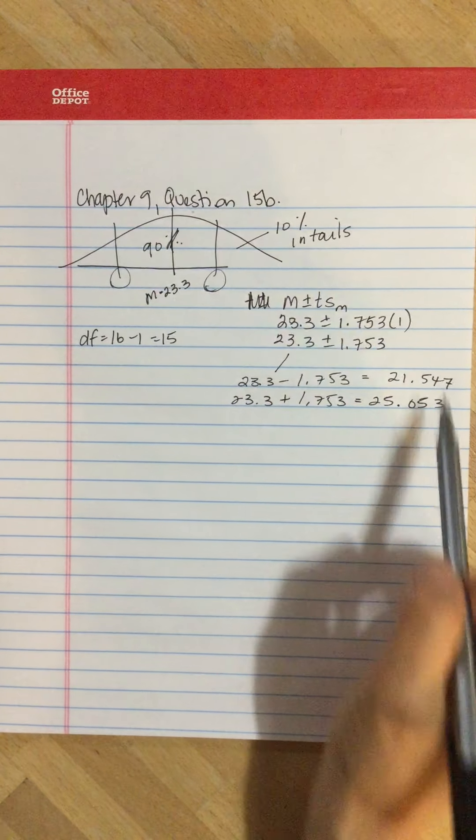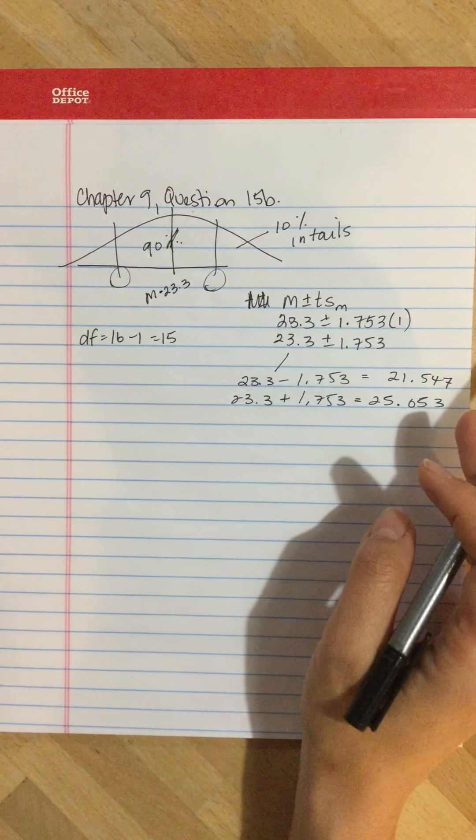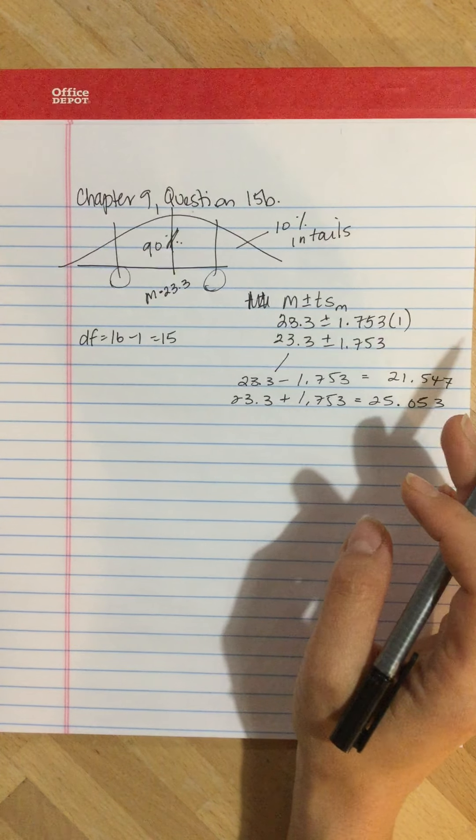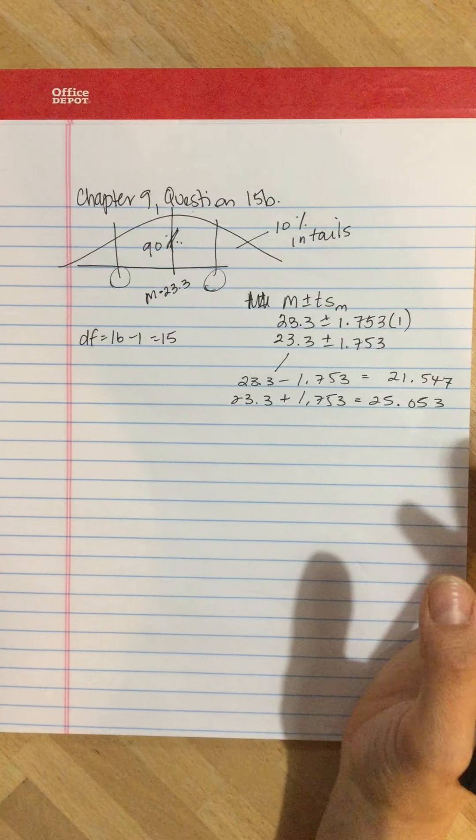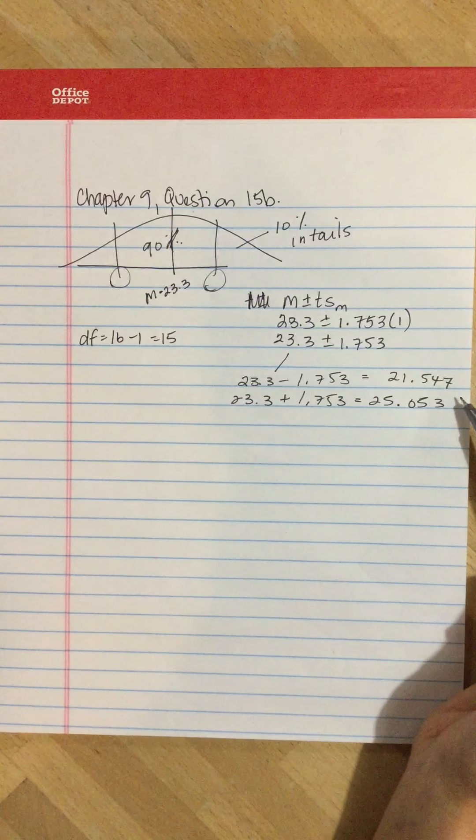What this tells us is we are 90% confident that the true value of the population mean is somewhere between 21.547 and 25.053.